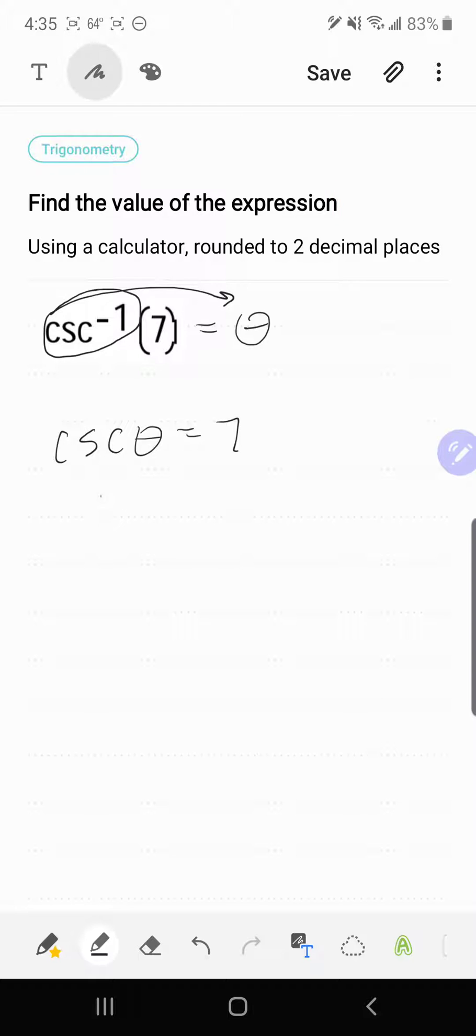Remember that cosecant theta is 1 over sine theta. And if I express 7 as a fraction, 7 over 1, I can then take and flip both sides. So that'll give me sine theta equals 1 over 7.